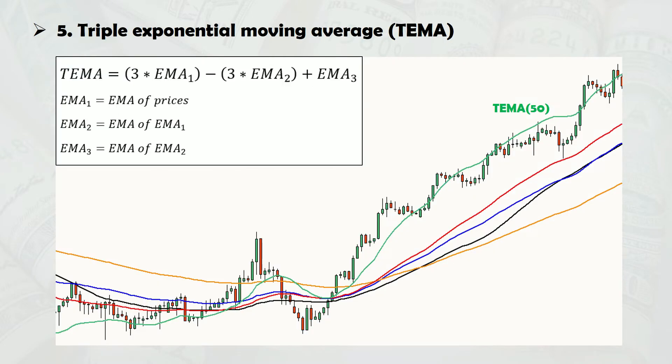Our fifth and final contender is the triple exponential moving average, which is a clever manipulation of the traditional exponential moving average. It attempts to produce a smooth line without incurring significant lag using a specific formula. The triple exponential moving average reacts much faster to prices, making it useful to quickly capture emerging trends.